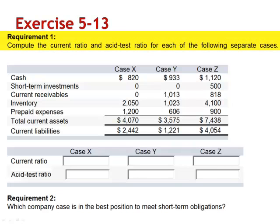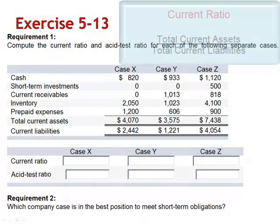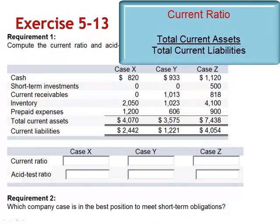Exercise 13. Compute the current ratio and acid test ratio for each of the following separate cases. The current ratio is the ratio between total current assets and total current liabilities.